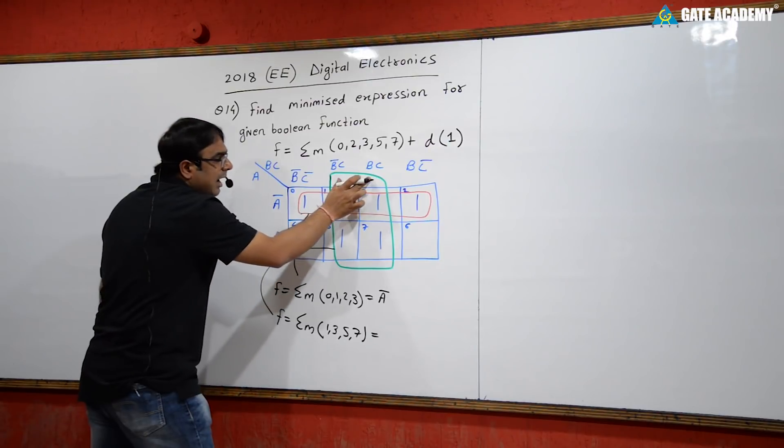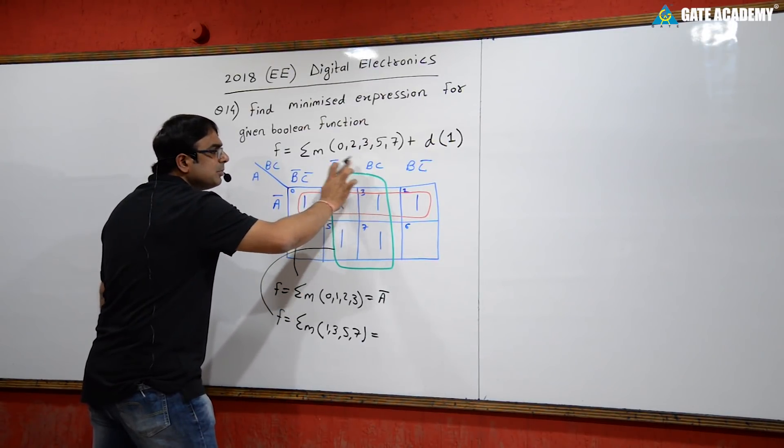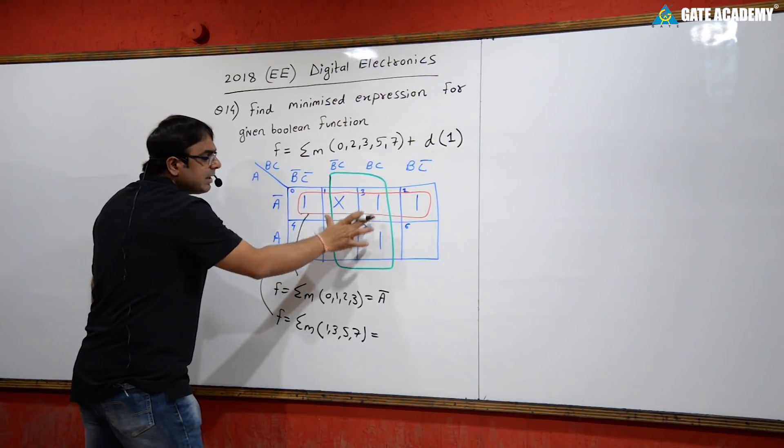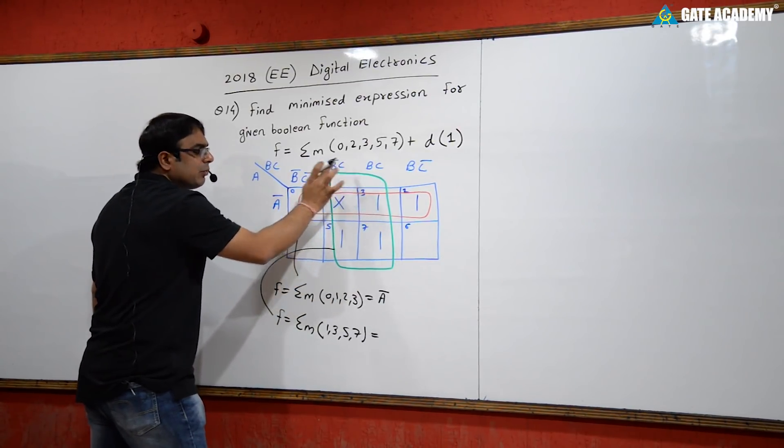For minterms 1, 3, 5, 7, c is constant throughout while b changes. So c equals 1 is constant.